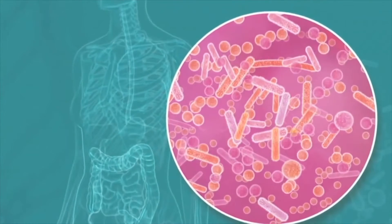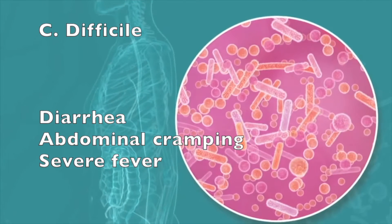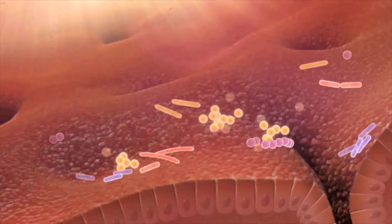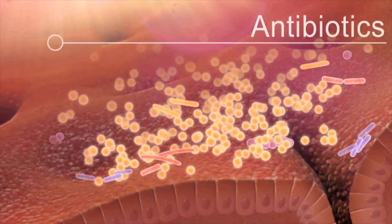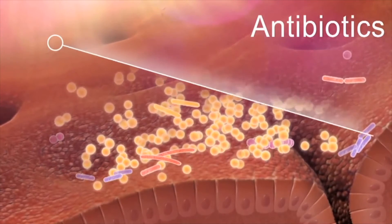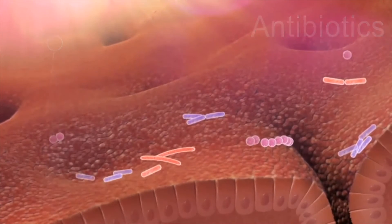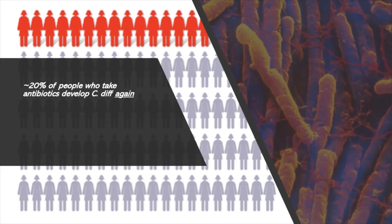Fecal transplantations are mainly performed as a treatment for recurrent C. difficile, which is a common bacterial stomach infection that causes diarrhea, abdominal cramping, and severe fever. Usually, a compilation of antibiotic therapy is used to help treat C. difficile. However, in some cases, the antibiotics that treat infections in the gut also kill off helpful bacteria, allowing C. difficile to take advantage and multiply in population size. About 20% of people who take antibiotics for C. diff develop the condition again. This recurrence may be due to the antibiotics disrupting the gut microbiome, in which case reintroducing good bacteria using a fecal transplant may be very helpful.